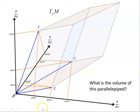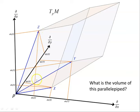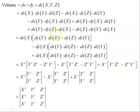So dx acting on vector x gives us that component. dx acting on vector y gives us this one, and dx acting on z gives us this one. So what is the volume of this parallelepiped? Following on as we did with two-forms, there's going to be something like dx wedge dy wedge dz acting on vectors x, y, z. The combinations we can have include dx(x)·dy(y)·dz(z), and then swapping the order of vectors gives sign changes due to anti-symmetry.